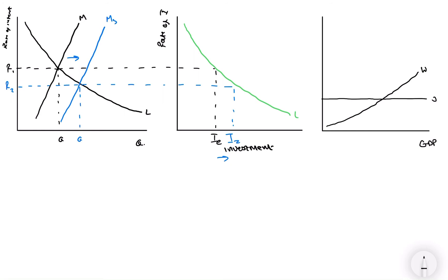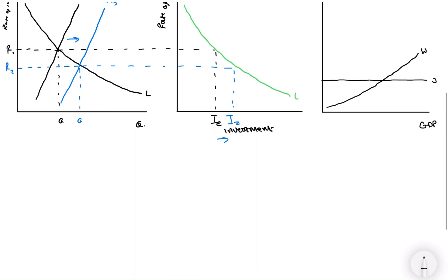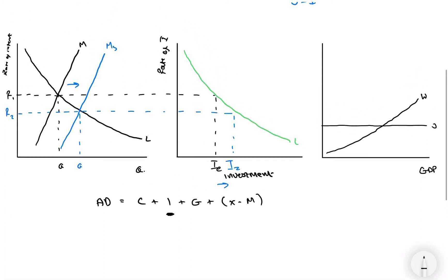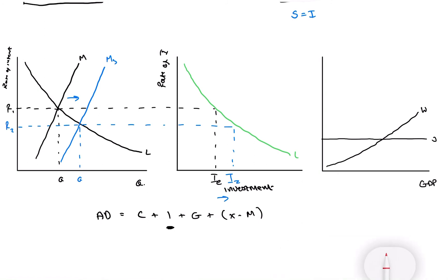And since investment is an injection, what I can do is I'll just draw AD is C+I+G+X-M, domestic consumption, investment, government expenditure, plus X minus M. Investment is an injection. Therefore, what's going to happen is an increase in investment is going to increase the J line upwards like this. And as you can see from that simple shift upwards, we have got an increase in GDP.